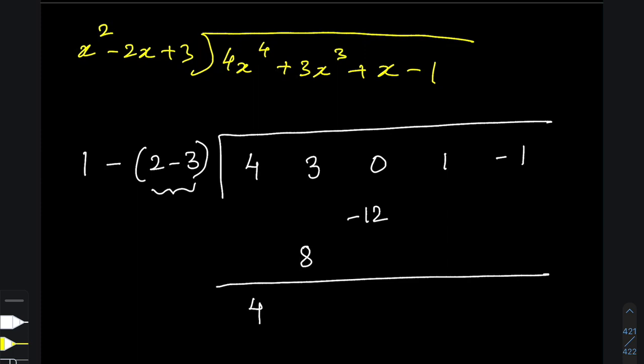Then, add 3 and 8, which is 11. Again, multiply 2 minus 3 with 11. That is 22 minus 33. And write it in these positions.